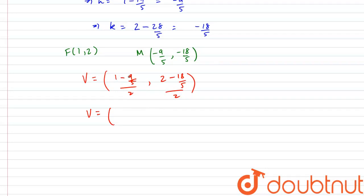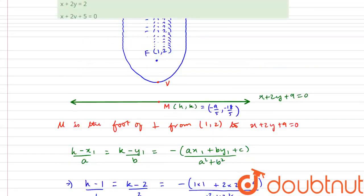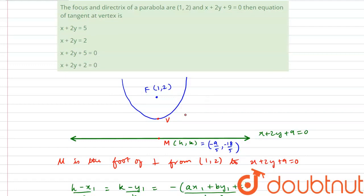For x: (5 − 9)/5 = −4/5, divided by 2 gives −2/5. For y: (10 − 18)/5 = −8/5, divided by 2 gives −4/5. So the coordinates of the vertex V are (−2/5, −4/5).